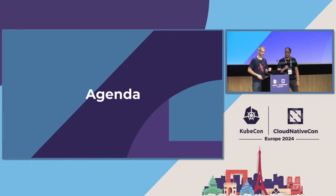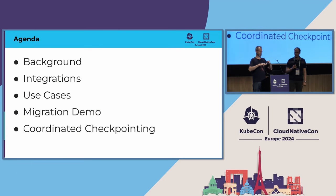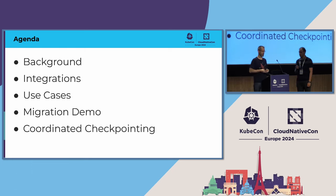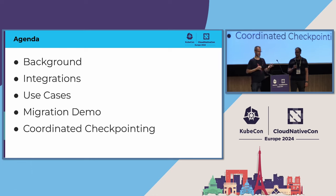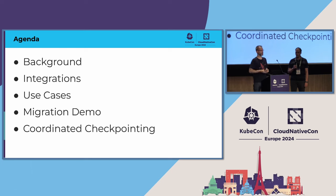Today's agenda will look something like this. I will go through the background of Checkpoint Restore, a bit about the history, why the names are the way they are. Then I'll talk about integration into existing container runtimes, engines, and orchestration. Then I'll talk about use cases, why you would want to use Checkpoint Restore in combination with containers. Then I will do a migration demo — not coordinated yet, just a simple part migrating from one host to another, about 500 kilometers away. And then Radustin will talk about coordinated checkpointing in an HPC environment, why it's necessary, and what the challenges are.